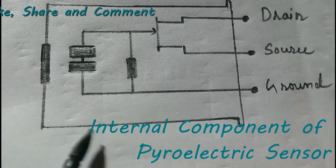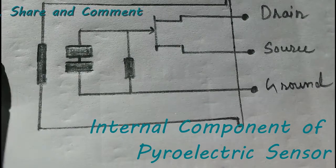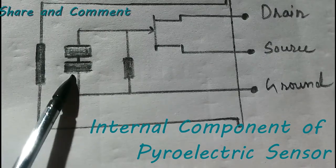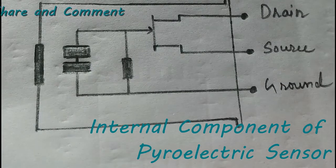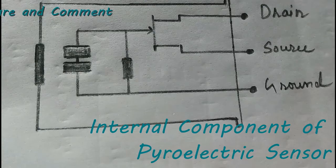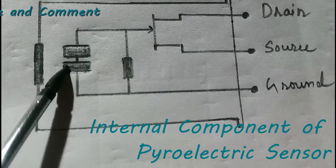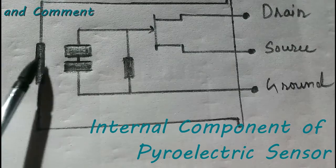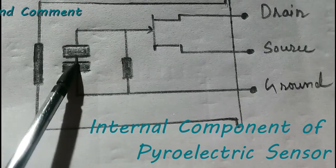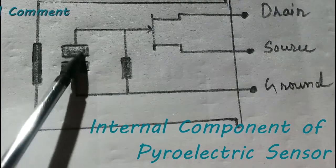With the help of this circuit diagram, you can easily understand the internal components inside the PIR sensor. This is the infrared filter glass which is on the top of the pyroelectric sensor. These are the two pyroelectric materials. Pyroelectric material is a type of material which generates voltage when we compress or tensile the material, or when we change the temperature of the material. When rays come into the PIR sensor through this pyroelectric filter glass, the temperature of the material will change and generate some voltage.